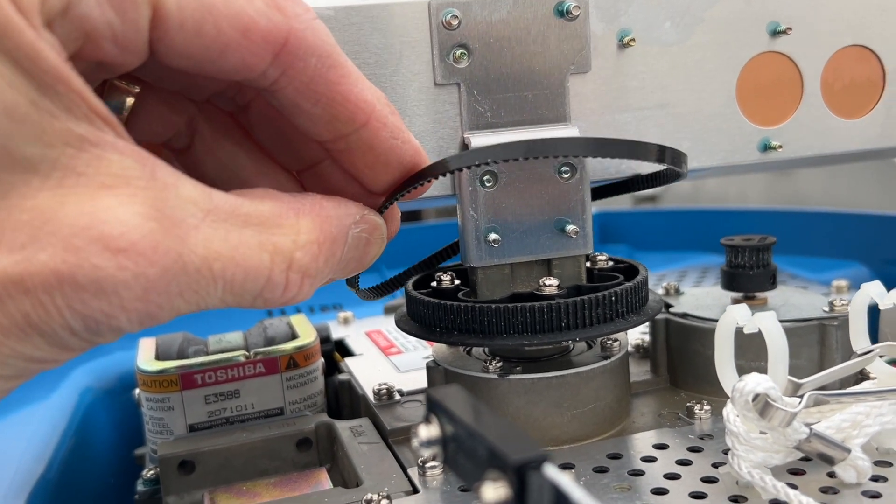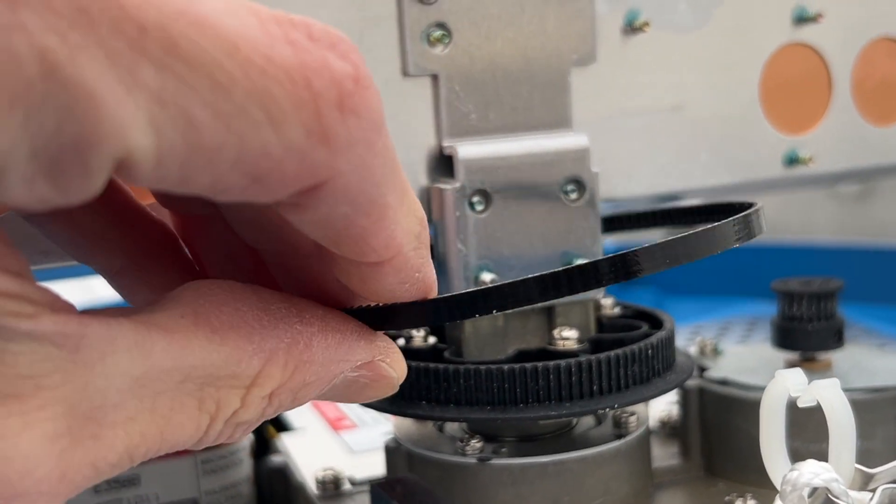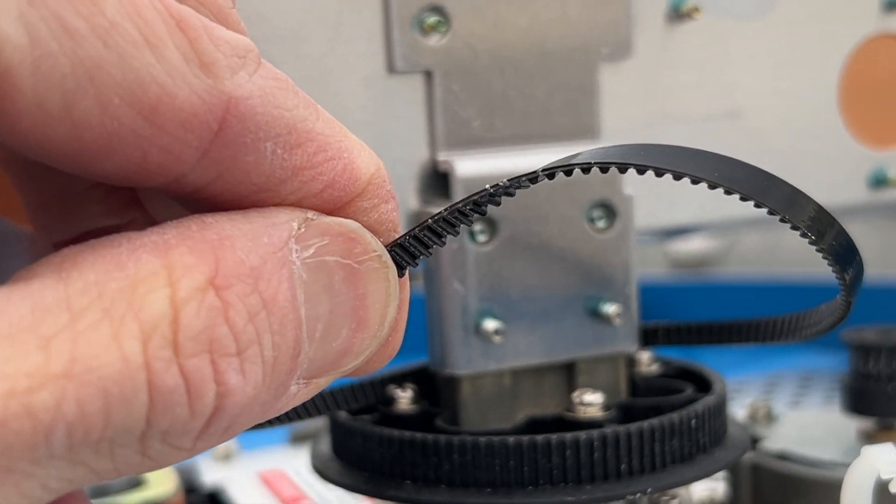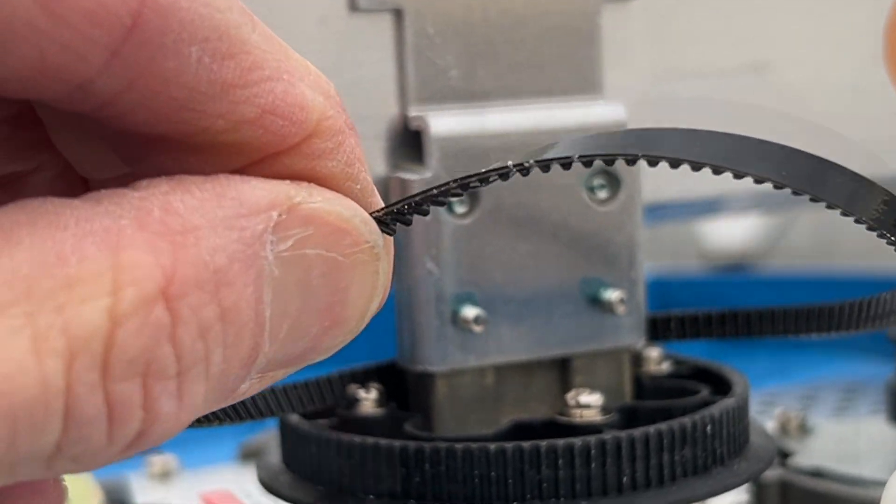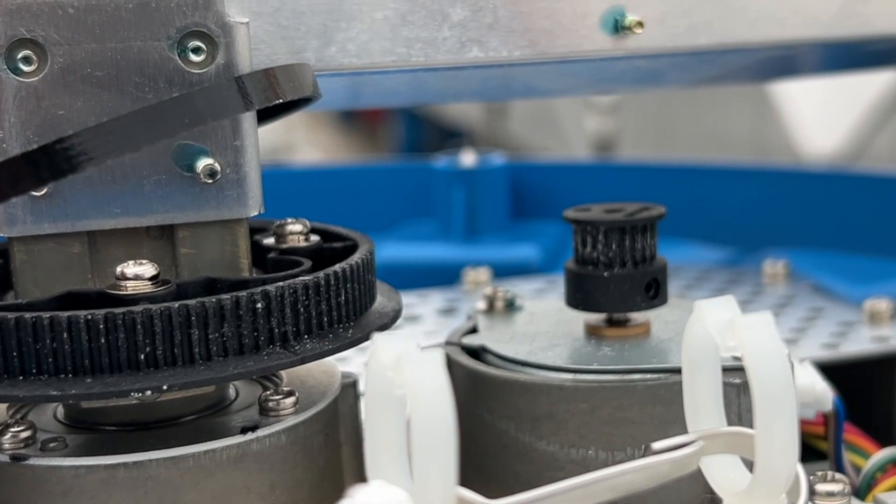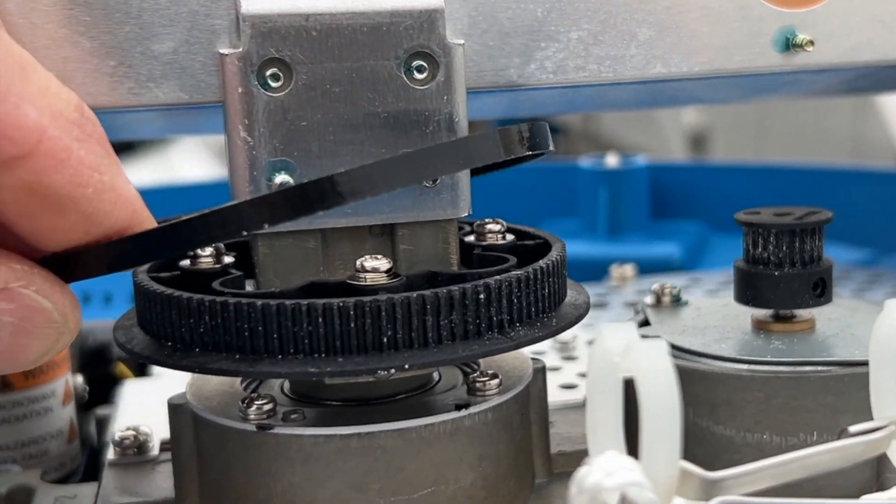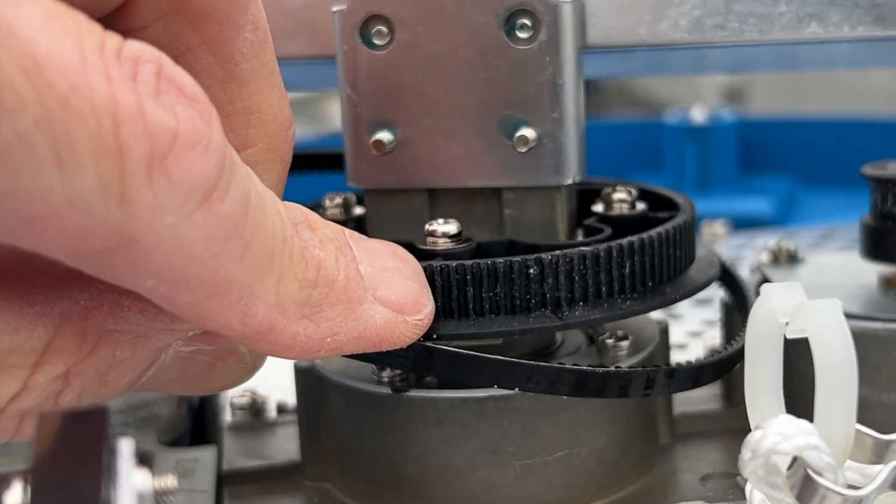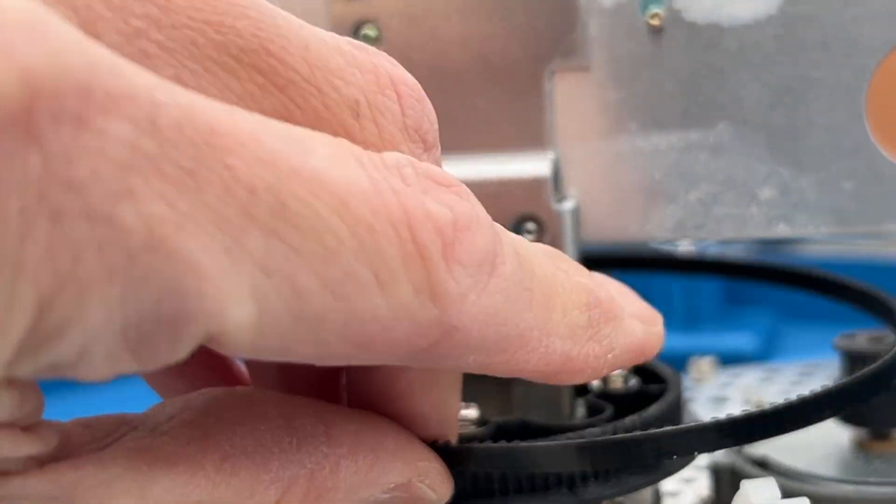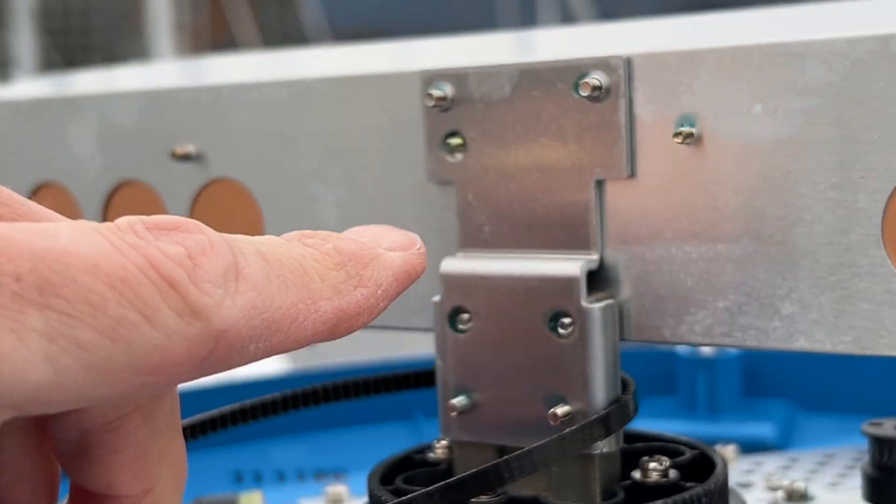So I guess the good news is the belt's not broken. These are very thin but strong, I assume, belts with teeth. And you can see the motor and the radar part are grooved so the teeth will go in there. Boy, it turns really easily. There's no resistance on this thing at all.